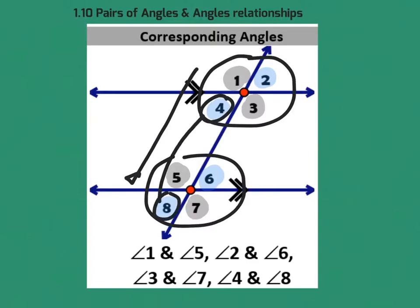The line that cuts the two parallel lines is known as the transversal, because things travel along it.